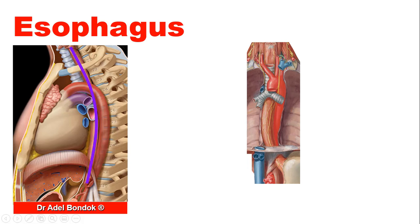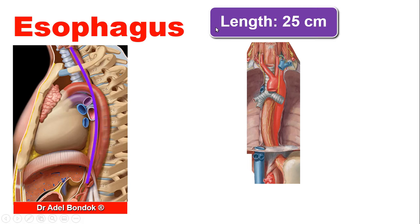Hello everyone, this is Dr. Adel Bondok, professor of anatomy and neuroscience, Mansoura University, Egypt. Today I am going to talk about the anatomy of the esophagus. What should you know about the esophagus? First, the length: it is about 25 centimeters long, so it is about 10 inches long.